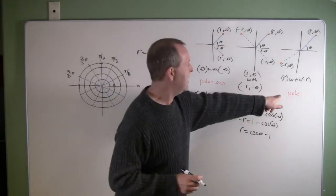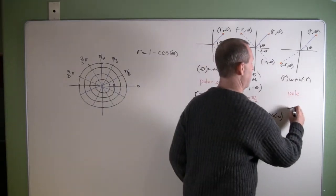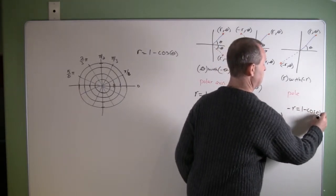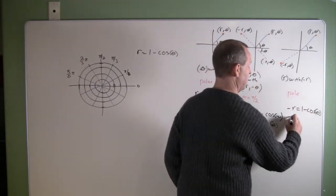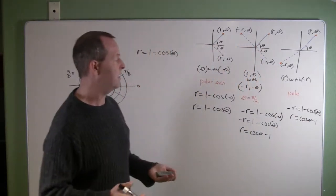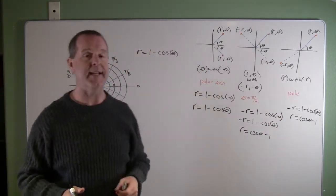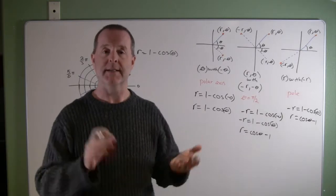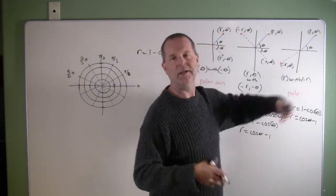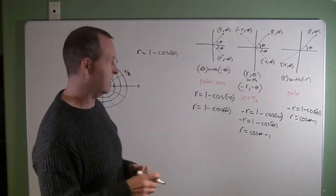And then likewise, this last case for symmetry, replace r with negative r. So I have negative r equals 1 minus cosine theta. Solve that for r. r equals cosine theta minus 1. And once again, this is not the same equation as this one. So I can't say that there's definitely symmetry about the pole. And the pole is the origin, 0, 0 in x, y world, or that particular point at the beginning of the polar axis.